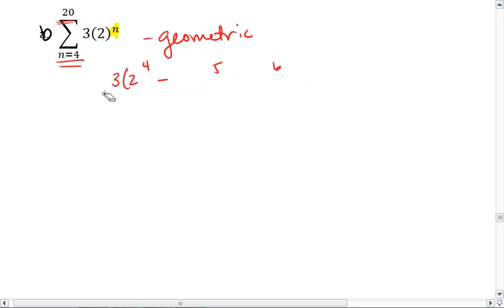Or, we can realize that since it's geometric, we can use our geometric summation formula: a₁ times (1 minus r^n) over (1 minus r). In which case, we just need to figure out what a₁ and what r are.